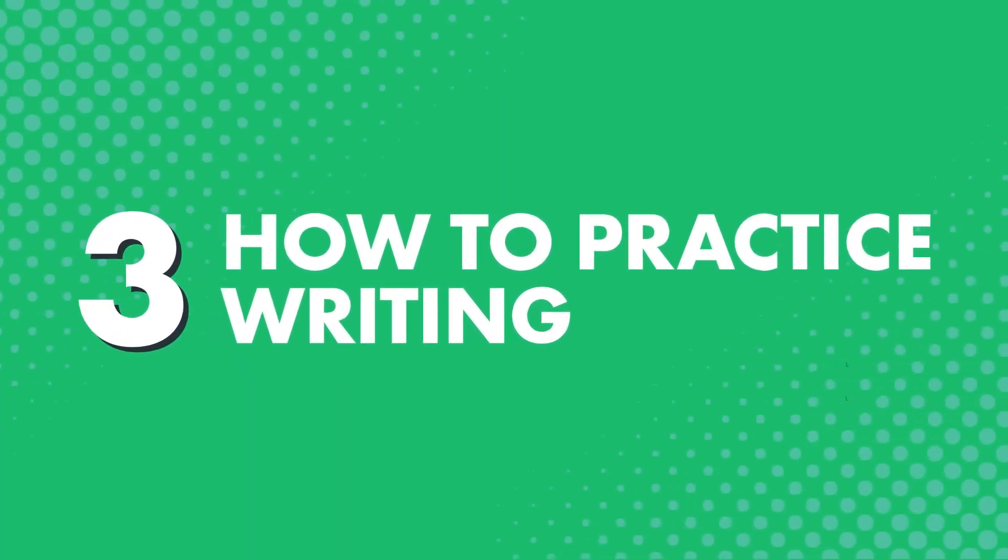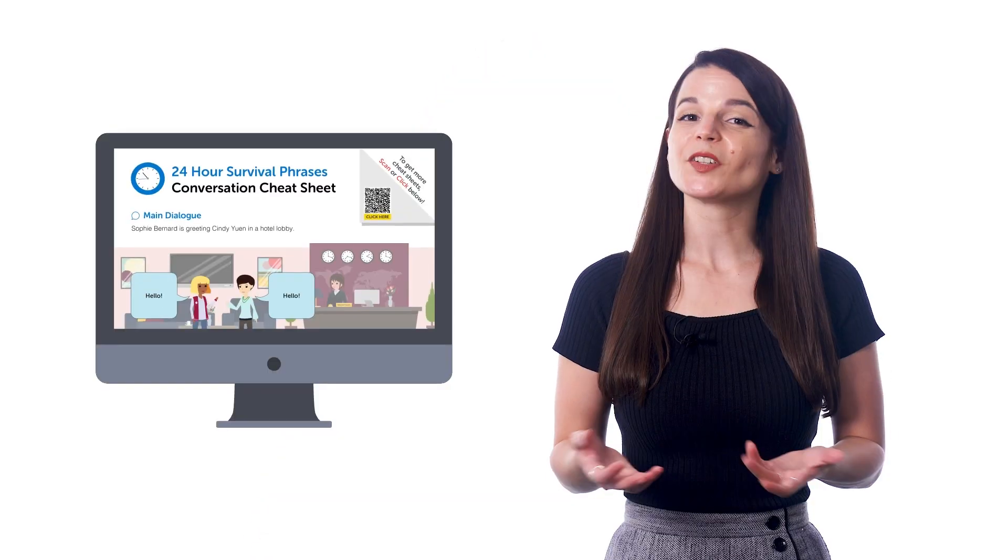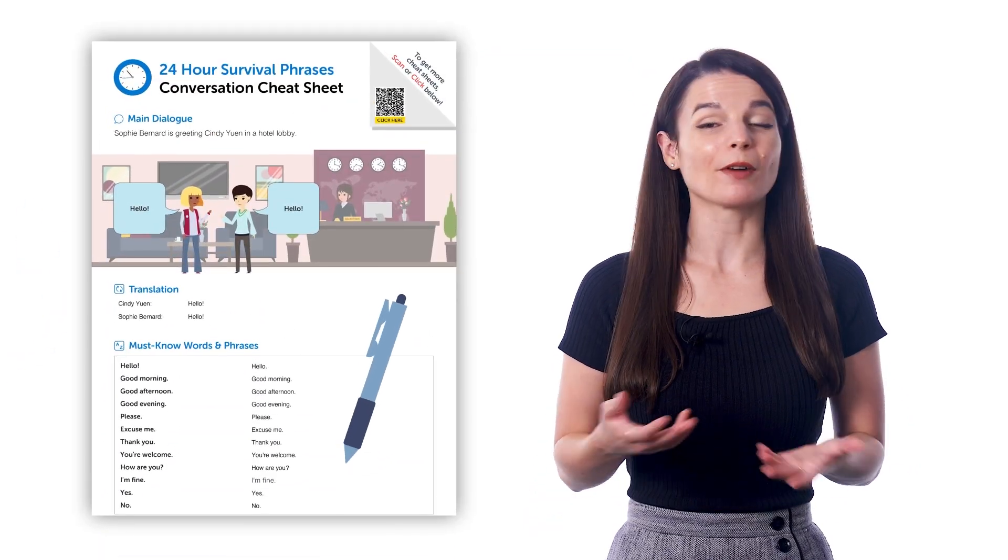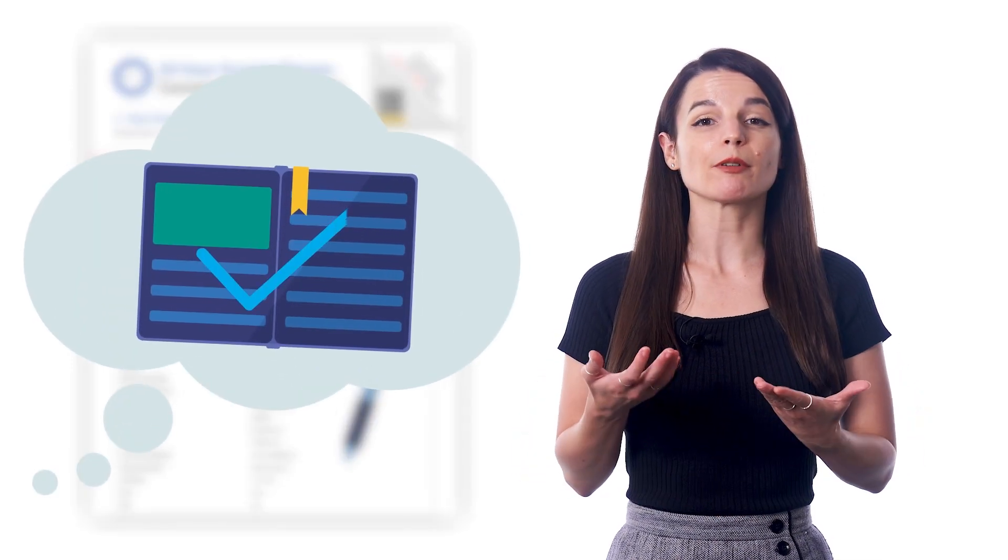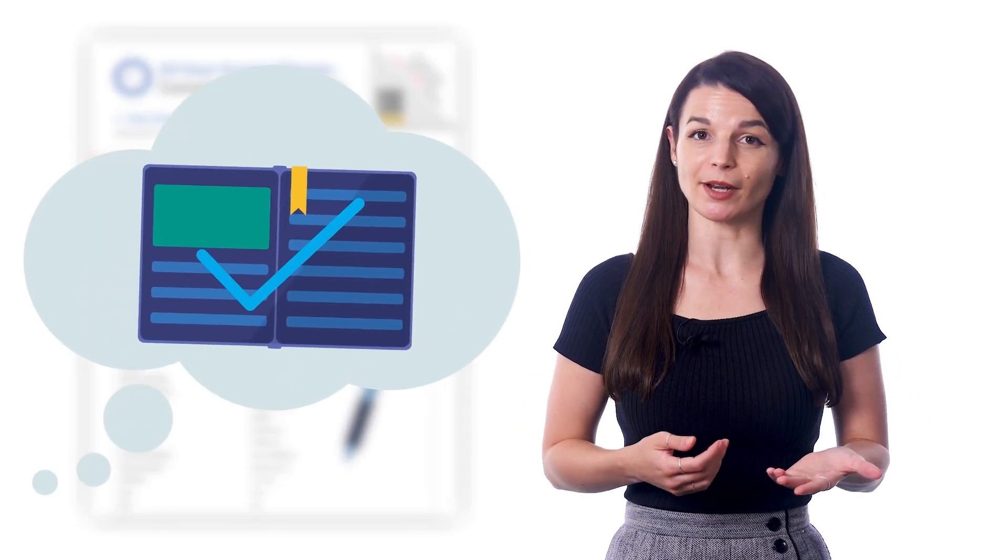Three, how to practice writing. The easiest way to practice writing is to simply copy out the words on the cheat sheet into a notebook. You can also print out the cheat sheets and write on them directly. And as a bonus, you get to remember all of the words and phrases better.